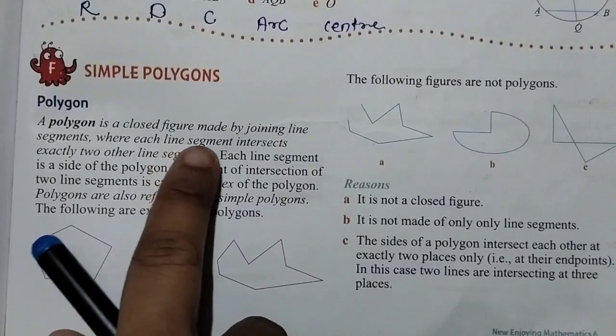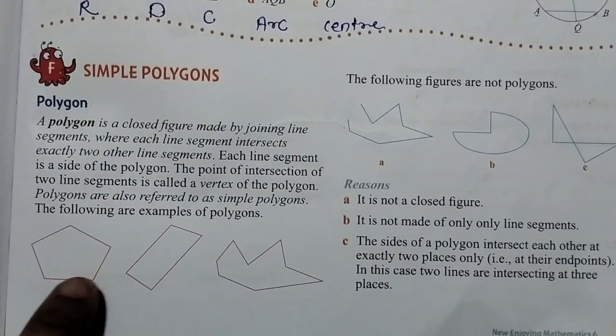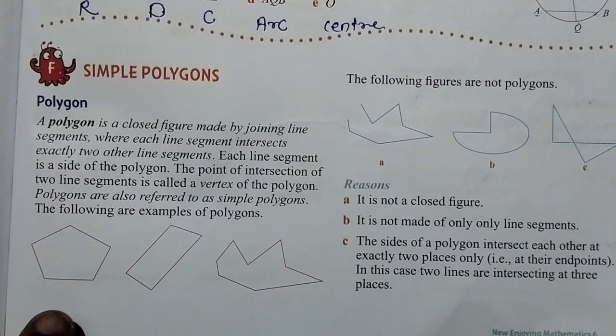A polygon is a closed figure made by joining line segments. Polygons are closed figures.